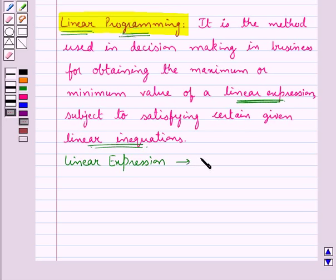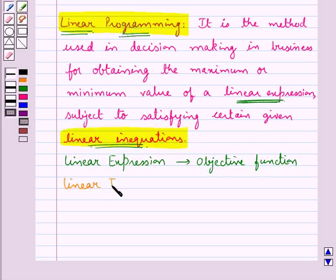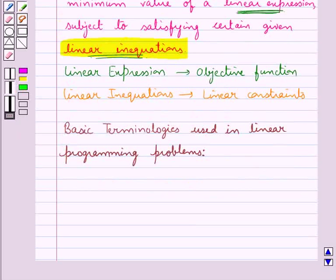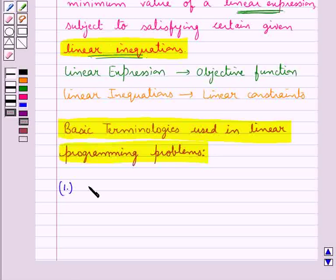This linear expression is known as the objective function. The linear inequalities are known as the linear constraints. Now let's discuss the basic terminologies used in linear programming problems.